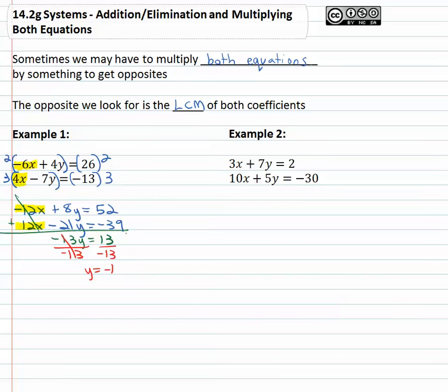Now we just have to go back and find x. Again we can go to either of the original equations. I like the one with the smaller numbers, so that's probably the second equation this time. I'll just put it down here, 4x - 7y, which is -1, equals -13.